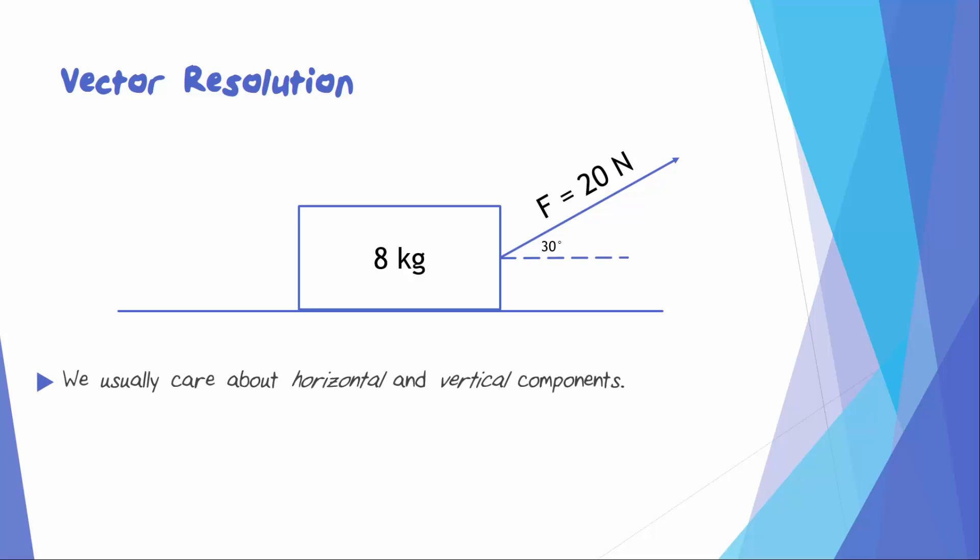In this case, and in most cases, we care about the horizontal and vertical components. Let's draw and label them. Fx represents the component of the 20 N that is to the right, and Fy represents the component of the 20 N that is upward.